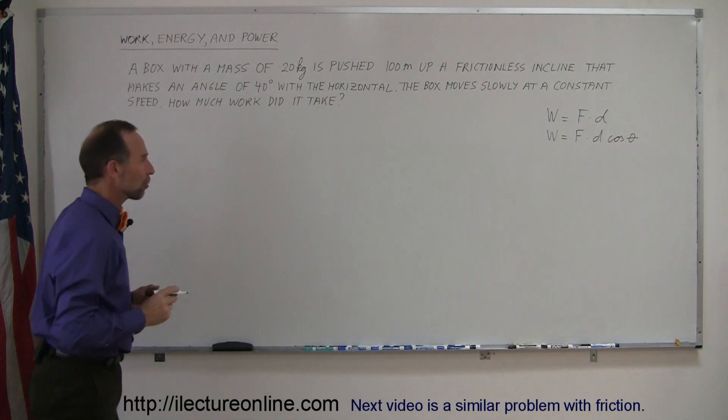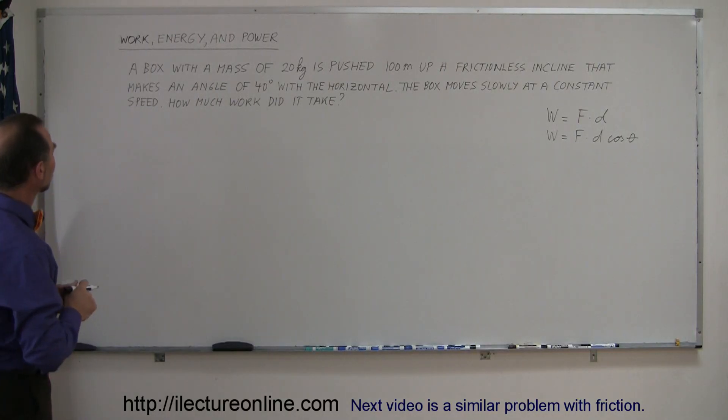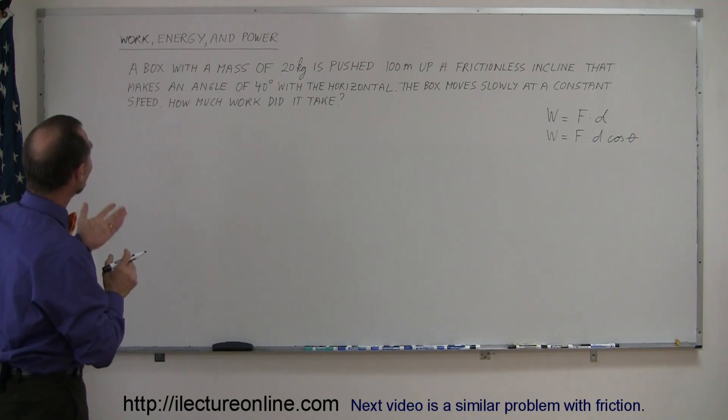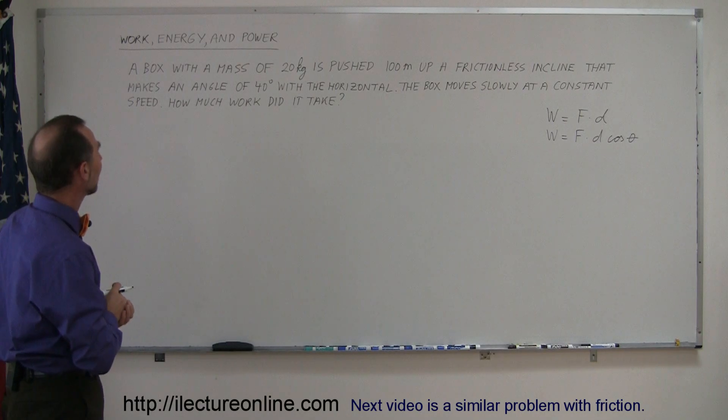Let's make a drawing of this problem, but maybe we should first read it. A box with a mass of 20 kilograms is pushed 100 meters up a frictionless incline that makes an angle of 40 degrees with the horizontal. The box moves slowly at a constant speed. How much work did it take?